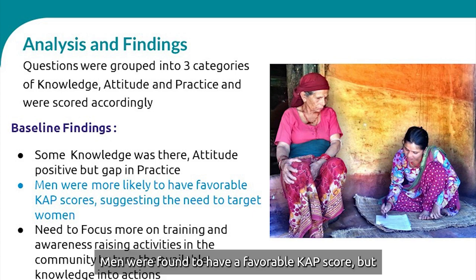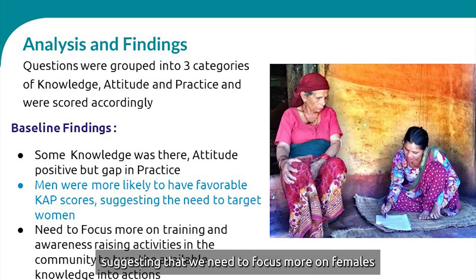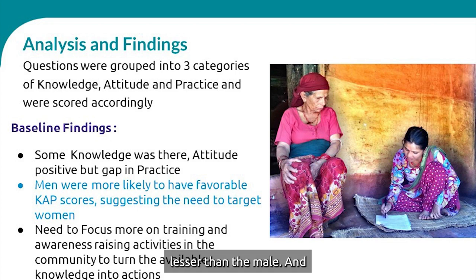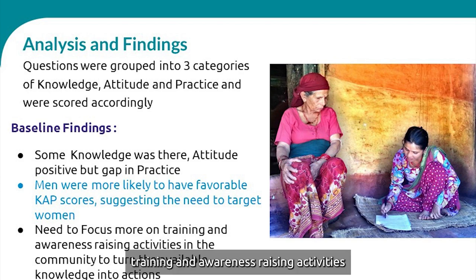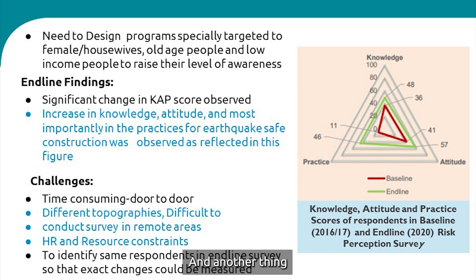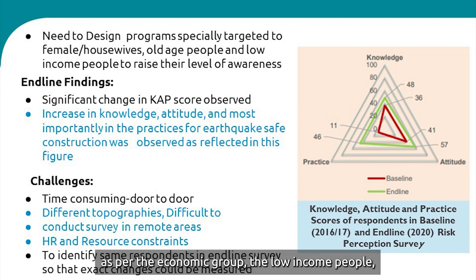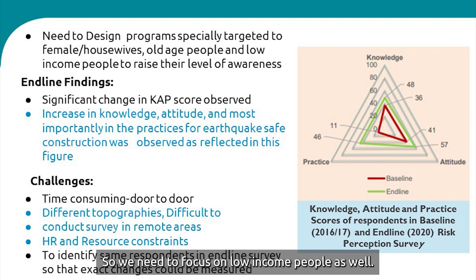We also analyzed data based on disaggregation. Men were found to have a more favorable KAP score, suggesting we need to focus more on females, whose knowledge was found to be lower than males. Another finding was the need to focus more on training and awareness-raising activities so that existing knowledge could be turned into action. We also suggested designing programs specifically targeted to females, housewives, elderly people, and low-income people, as low-income groups scored relatively lower than high-income groups.